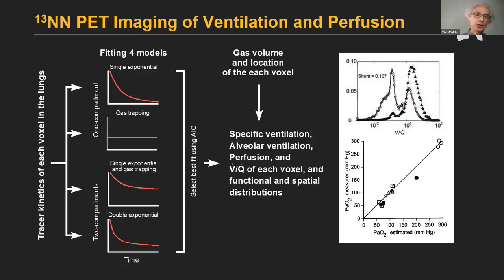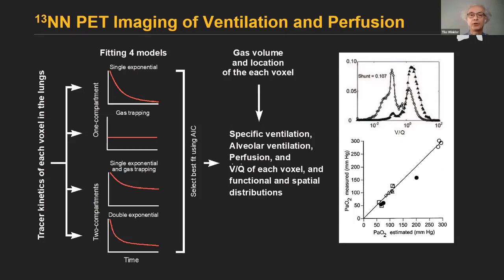In the case of two-compartment models, there is actually an assessment of sub-resolution functional heterogeneity. We take the best fit of those four models and derive an overall distribution of parameters for the lung. Additionally, we take in gas volume and the location of each voxel so that we can derive specific ventilation, alveolar ventilation, perfusion, VQ distribution among the voxels, and spatial distributions for the different parameters.